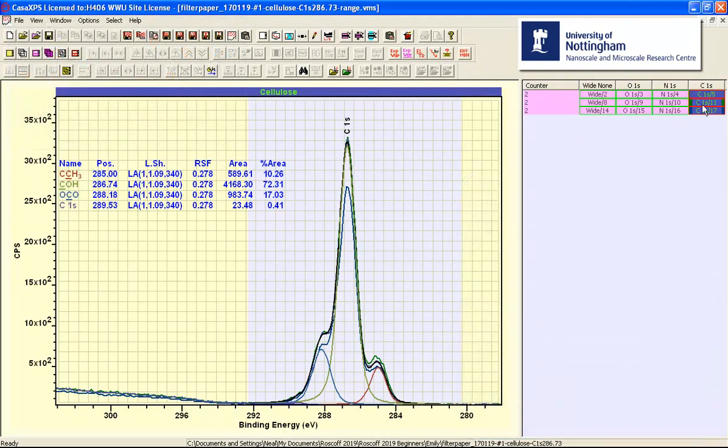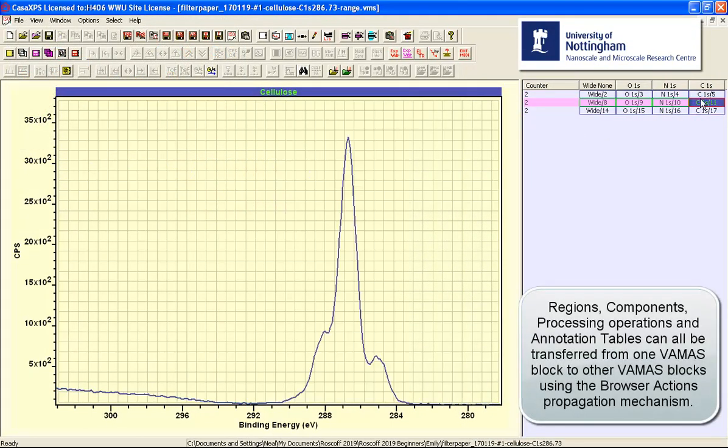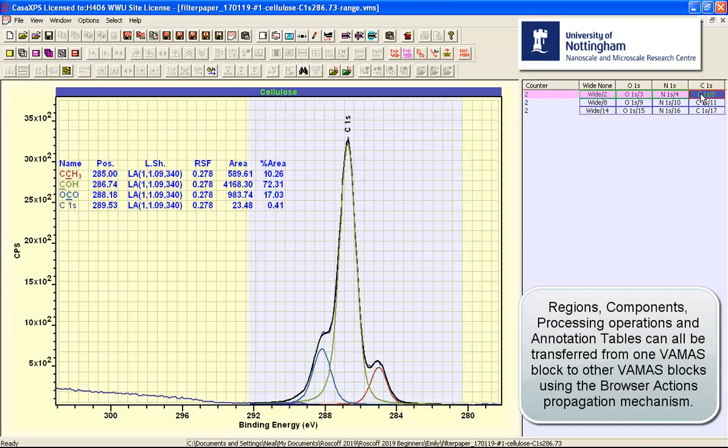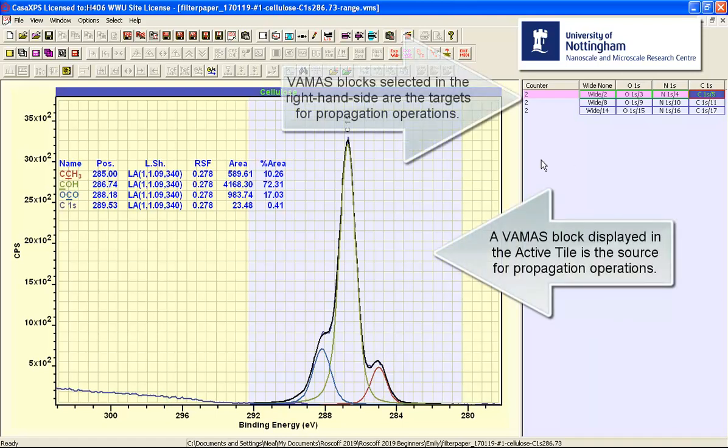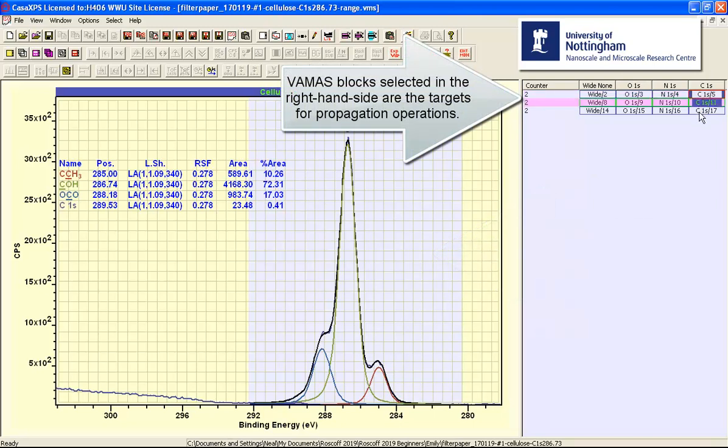What we would like to do is transfer the peak model from these prepared data to other data within this FAMAS file. And we can do this if we display in the active tile the VAMAS block that contains a peak model and annotation, and then select the other VAMAS blocks for which there is no processing other than the energy calibration.